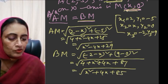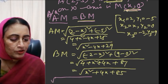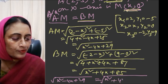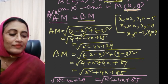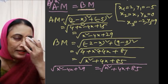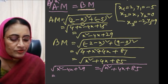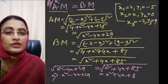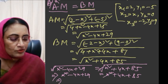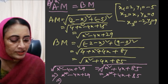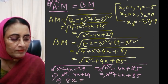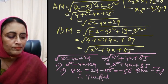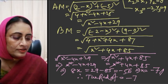BM = √[(-2 - x)² + (9 - 0)²] = √[x² + 4x + 4 + 81] = √[x² + 4x + 85]. According to the question, AM = BM, so √[x² - 4x + 29] = √[x² + 4x + 85]. Squaring both sides: x² - 4x + 29 = x² + 4x + 85. Cancelling x², we get -4x - 4x = 85 - 29, so -8x = 56, giving x = -7.